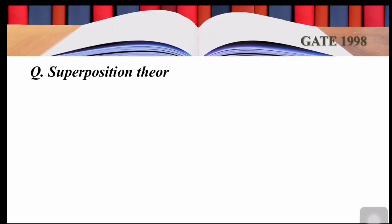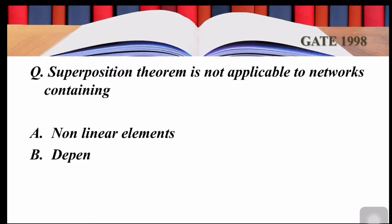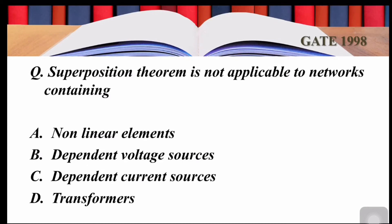The first question is from GATE 1998: 'Superposition theorem is not applicable to networks containing — Option A: nonlinear elements, Option B: dependent voltage sources, Option C: dependent current sources, Option D: transformers.' Now, who can tell me the statement of superposition theorem?